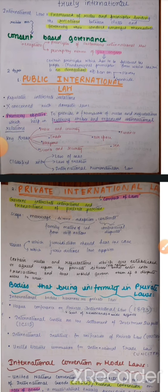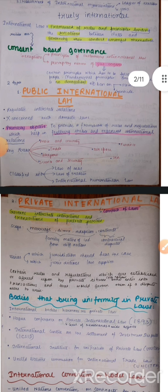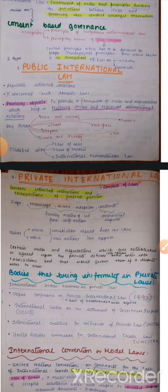Definitions aapko bahot hi achhe se yaad rakhni hain. Public international law ki do tarah ki definitions ho sakti hain, dono hi aapki textbook mein likha hua hai. Framework of rules and principles governing the relations between states and governing their conduct amongst themselves — it's concerned with interstate regulations. Another definition: public international law governs the intercourse between nations by determining the rights and obligations of the governments of different nations, and it regulates relations between nation states.